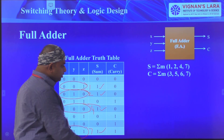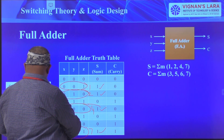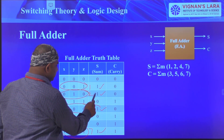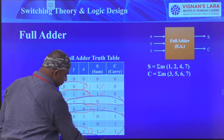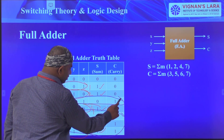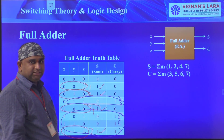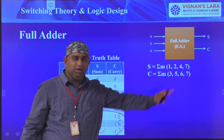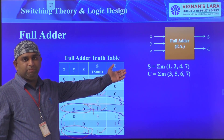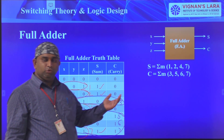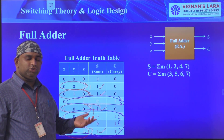Coming to the carry function, we have carry equals 1 at minterms 3, 5, 6, and 7. So carry = Σm(3, 5, 6, 7). Now we have to simplify these expressions using Boolean theorems, K-map, or the tabular method — whichever method you want to use.